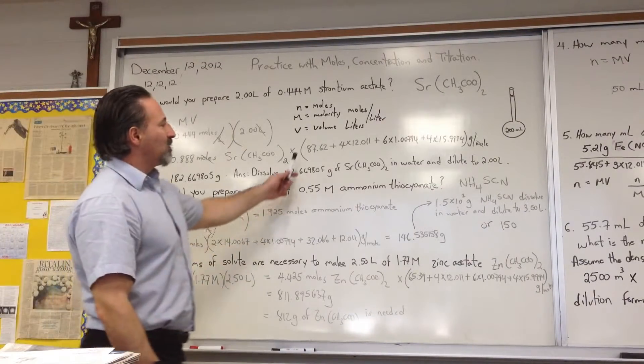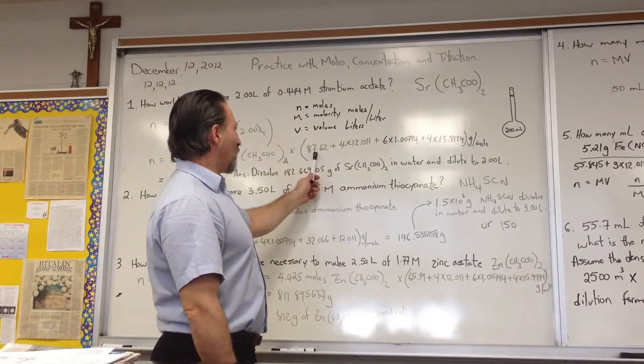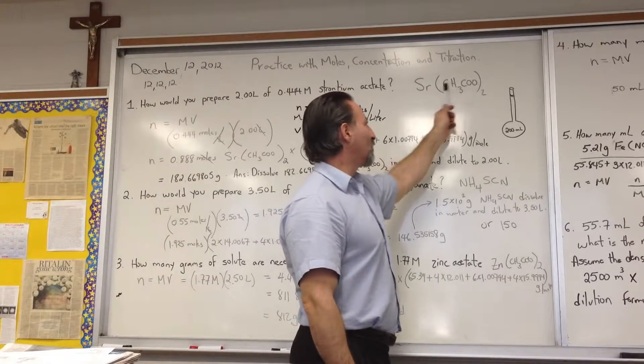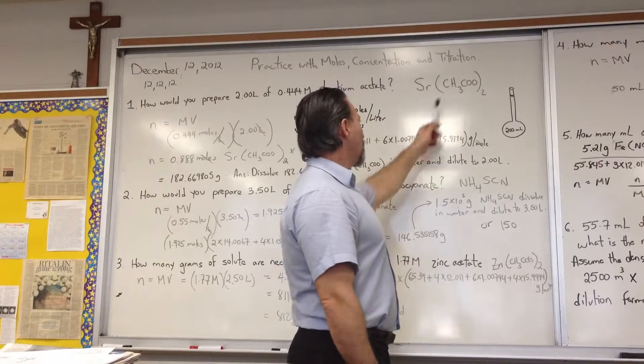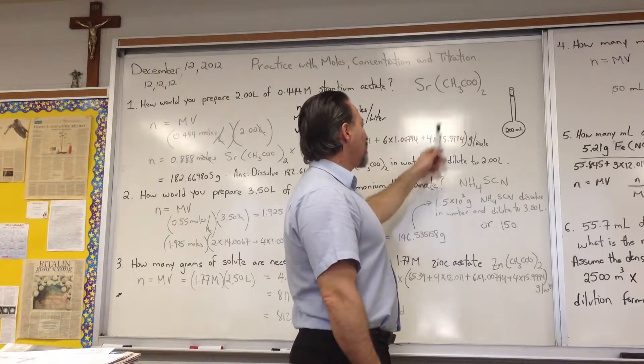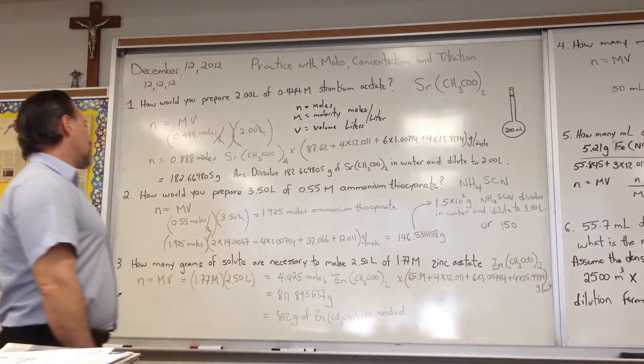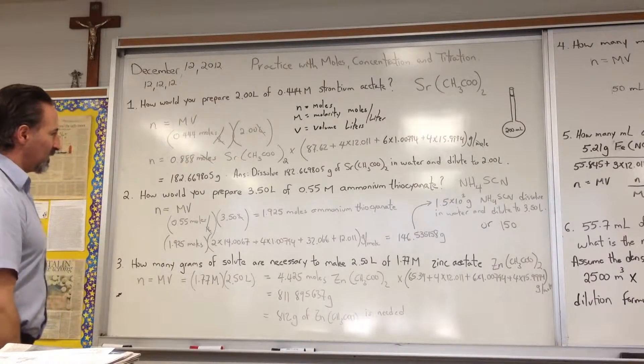Two liters of that solution at a concentration of 0.444 is going to give us 0.888 moles of strontium acetate. We then multiply by the molar mass of strontium acetate, which is composed of one strontium atom, four carbons. There's two carbons in this formula, but because the formula is built of one by two, you have four carbon atoms, six times hydrogen for the same reason, and four times oxygen for the same reason.